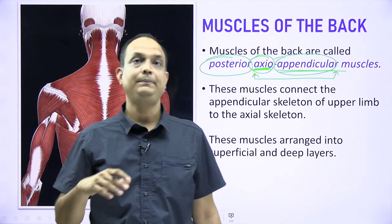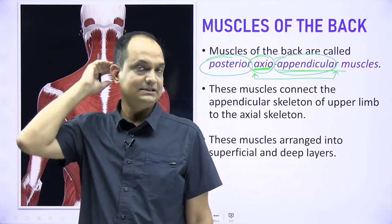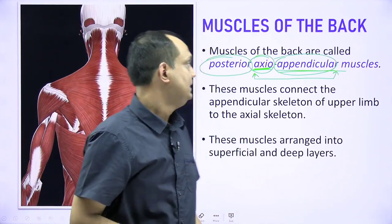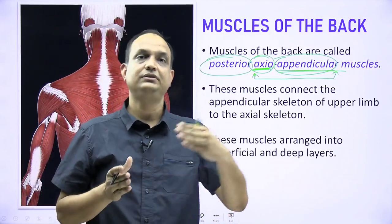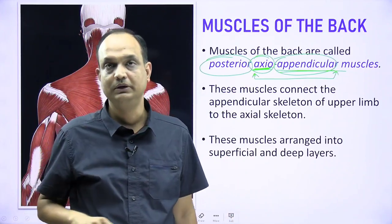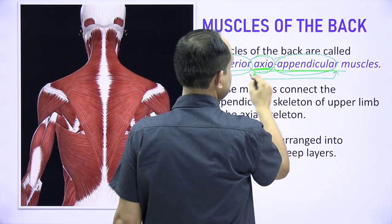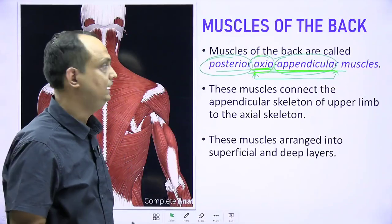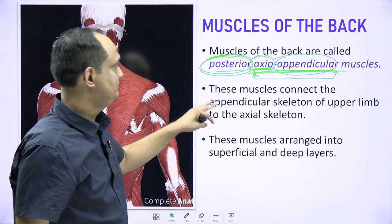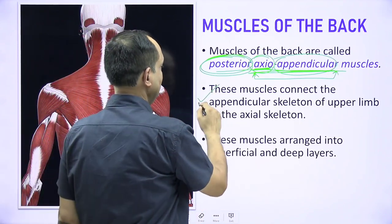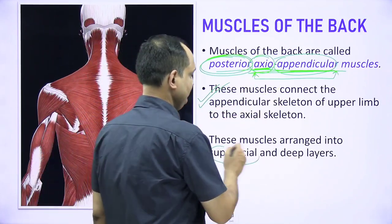Trapezius inserts on the scapula and clavicle, and is attached at the midline to the vertebral column. Similarly, latissimus dorsi connects the midline structure with the upper limb, inserting on the humerus. These are therefore called posterior axio-appendicular muscles, connecting the appendicular skeleton with the axial skeleton, and they are arranged in a superficial group and a deep group.